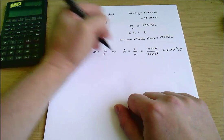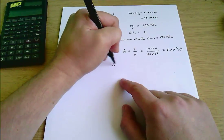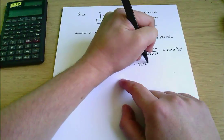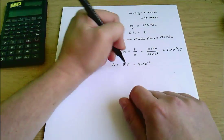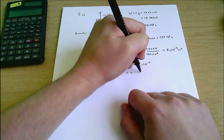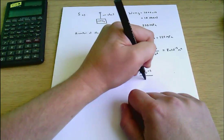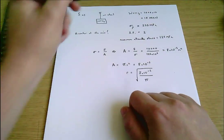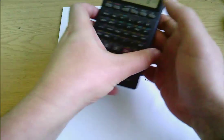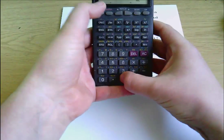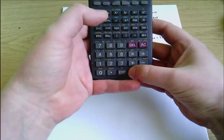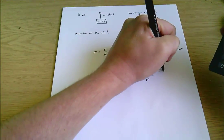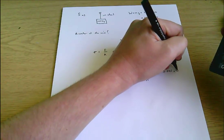We also know then that the area is pi r squared which equals 8 times 10 to the minus 5, and that means that r equals 8 times 10 to the minus 5 divided by pi all square rooted. So if I divide that by pi and square root that I get 5.046 times 10 to the minus 3 meters, that's about 5 millimeters.